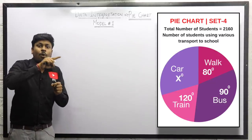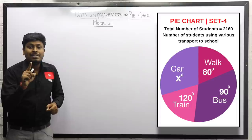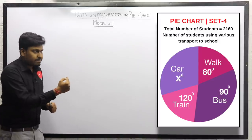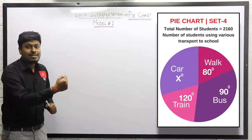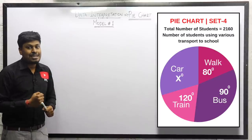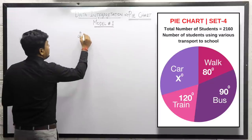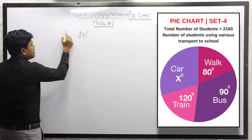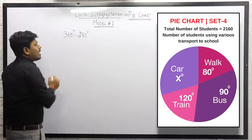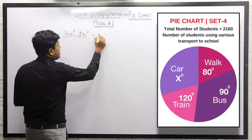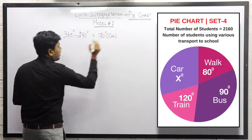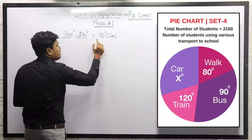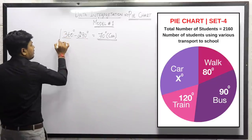Since all values must add to 360 degrees, let's add walk, bus, and train: 120 + 80 = 200, and 200 + 90 = 290 degrees. The total must be 360 degrees, so 360 minus 290 gives us 70 degrees — that is the value for car.